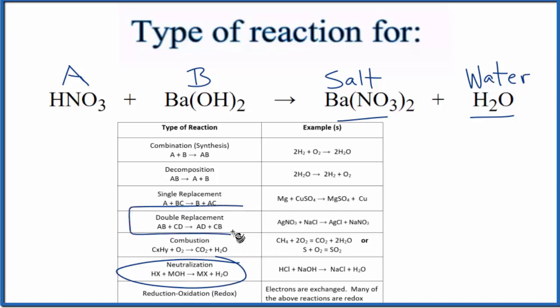It's also a double replacement reaction. That's because the barium is changing places with the hydrogen. So now I have barium nitrate, Ba(NO3)2, and then HOH. HOH, that's H2O.